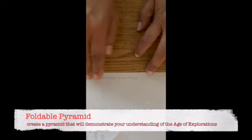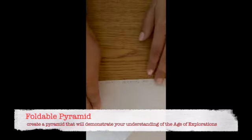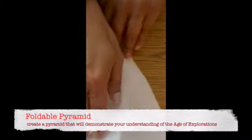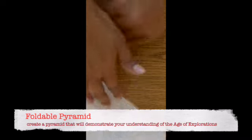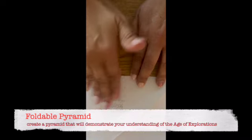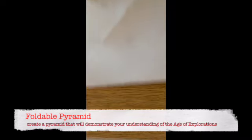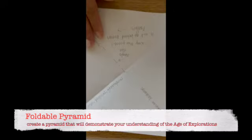On the back side is where you're going to draw images or pictures to represent the Columbian Exchange, the resources physical or geographical, and the human factors.